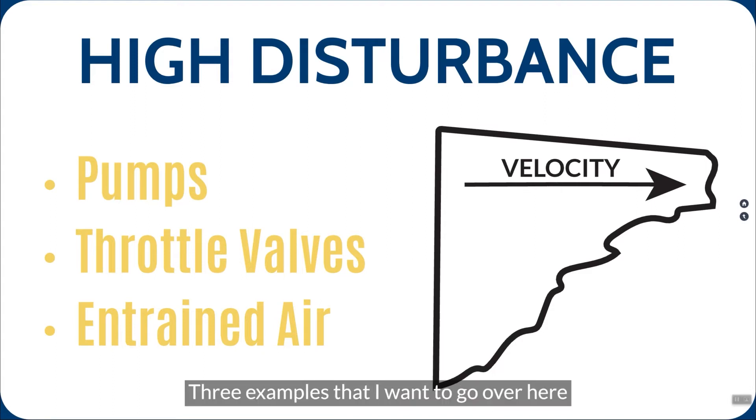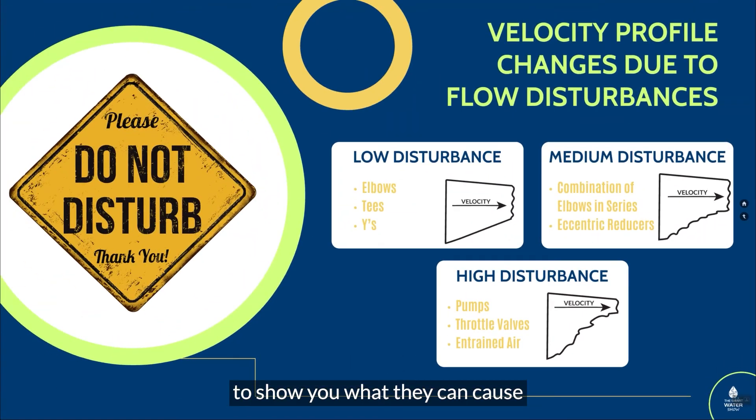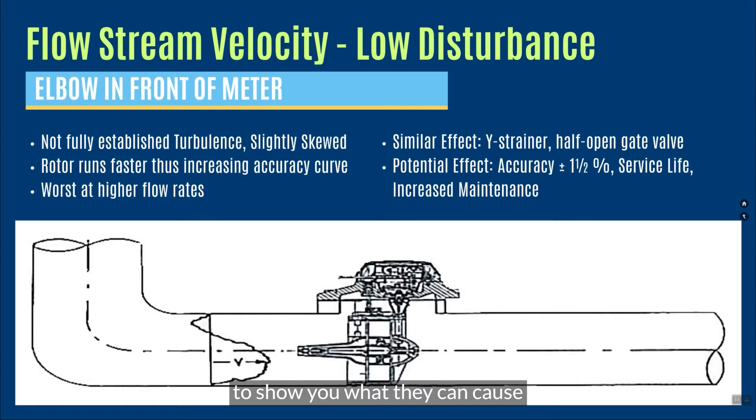Three examples that I want to go over here to show you what they can cause when you have an installation that's not done correctly. In this case, let's say I've got an elbow in front of the meter. All manufacturers give you the amount of straight pipe that they want before the turbine element. And the reason they do this is because the straight pipe in front of the turbine element will straighten out that velocity profile.